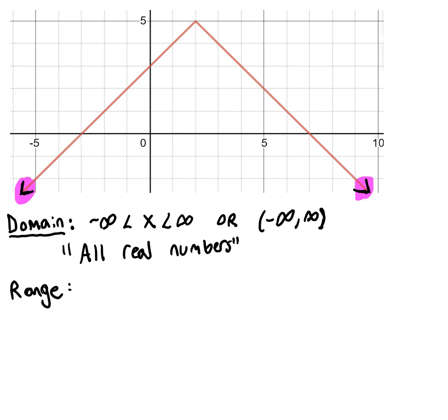The range is the y values. The lowest that this graph goes is negative infinity because again these arrows mean it's going down forever, but it does have a peak up here, a highest y value, and that's a y value of 5.